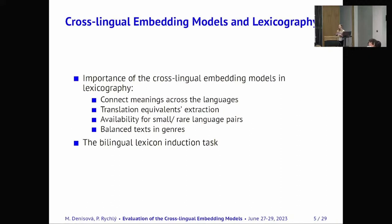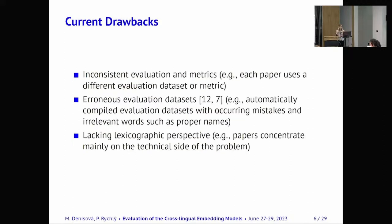And in the NLP the retrieving of translation equivalents from these models is called the bilingual lexicon induction task. So the current drawbacks of these models are that the evaluation of these models is inconsistent because every paper uses different evaluation datasets and report different precisions, so it's hard to compare these models to each other. And also these datasets are compiled automatically, so usually they contain a lot of mistakes and irrelevant words such as proper names. And of course they are lacking lexicographic perspective because these papers are mainly from the NLP field and they concentrate on the technical side of the problem.